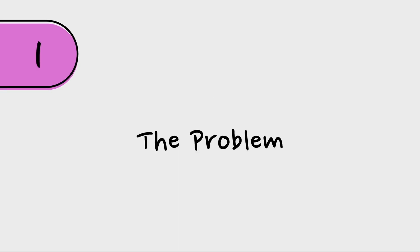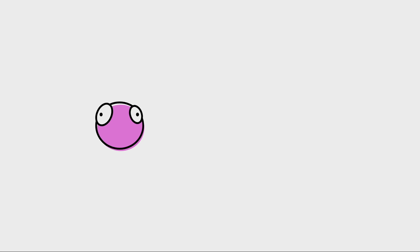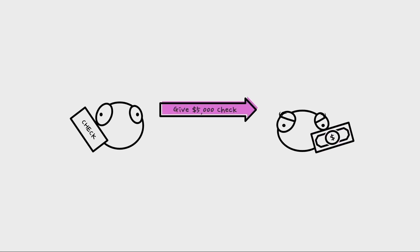The first thing we're going to look at is the problem that warranties are trying to address. So if we take somebody like Bob, and Bob has a check, and he is selling that check to Barb — it's a check for $5,000, and in exchange she's going to pay $4,700 for that check.